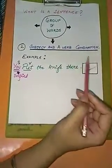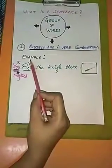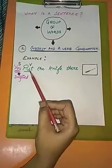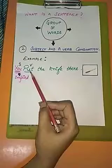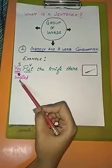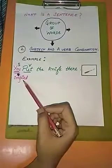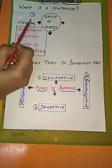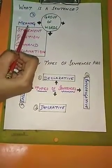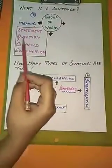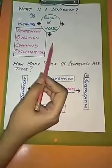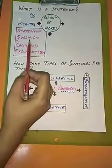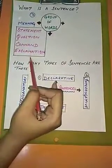Sometimes a subject is not given but is understandable. For example, put the knife there. Here the word put is given but subject was not given, so the subject which is not given — you — is implied over here. The third and the most important characteristic is the meaning. The meaning of any sentence may be different based on different expressions — maybe a statement, question, command, or any exclamation.